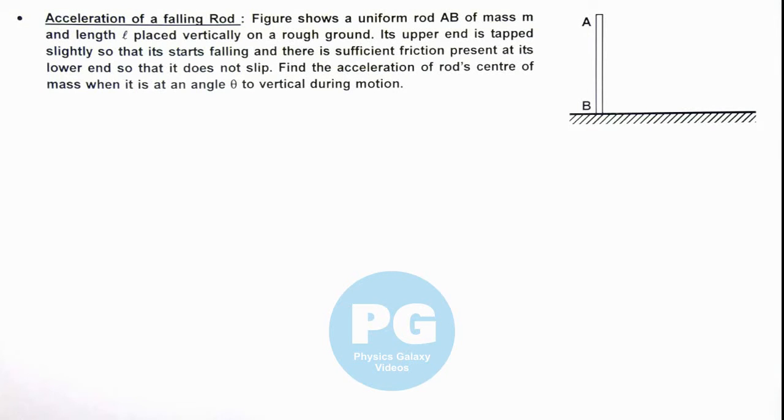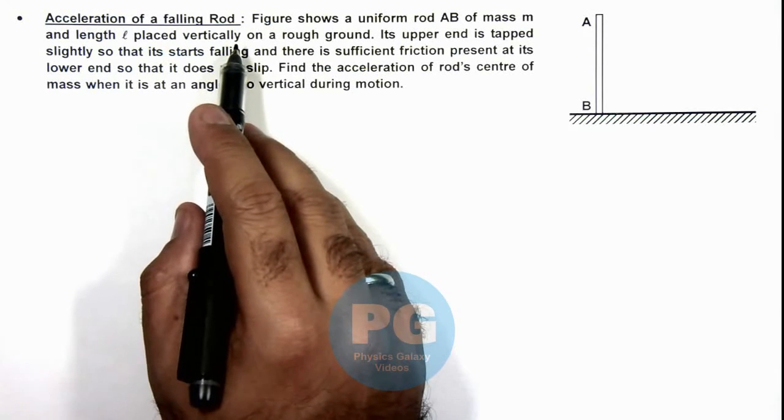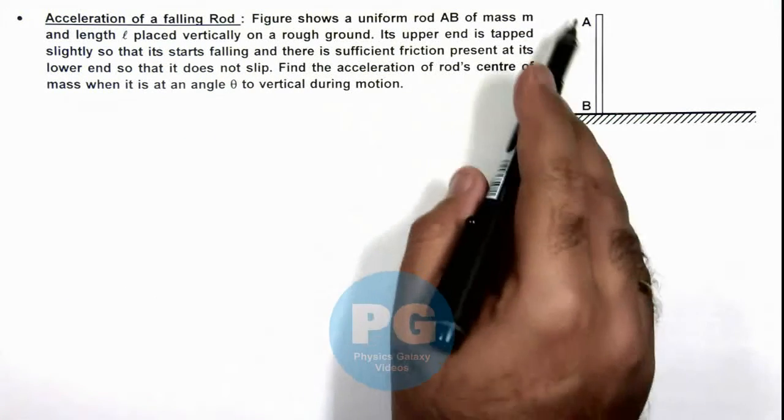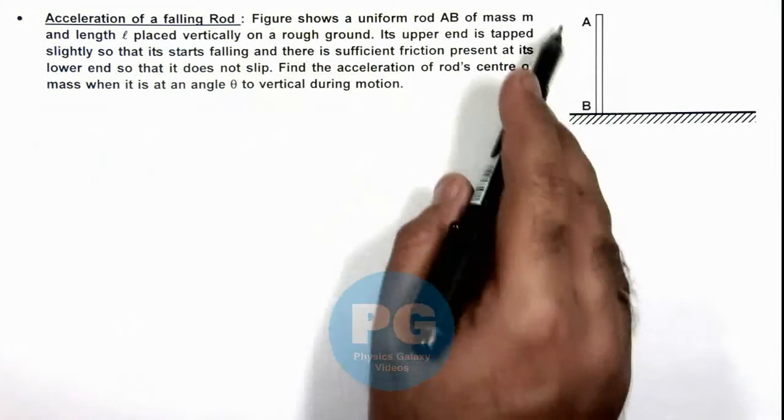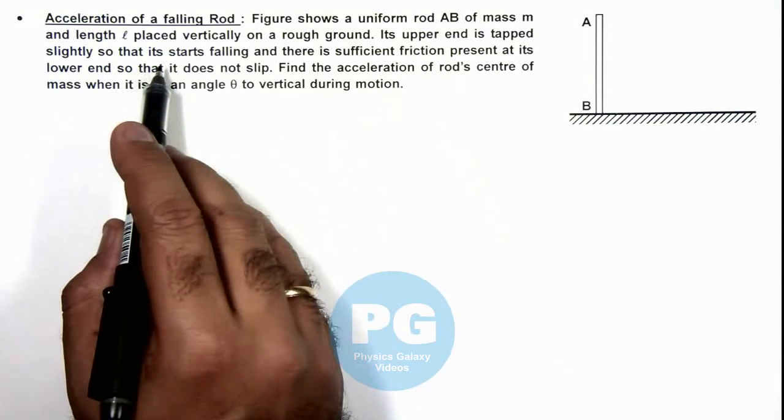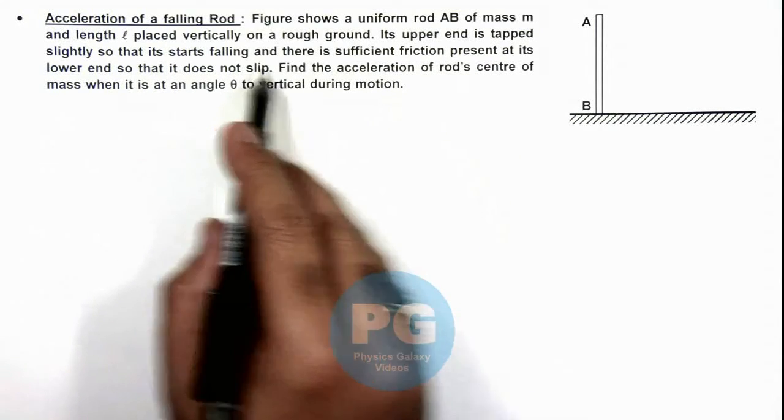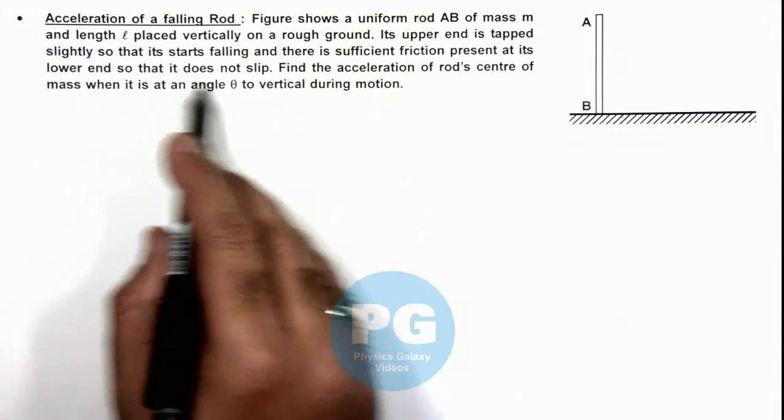In this illustration, we'll analyze the acceleration of a falling rod. The figure shows a uniform rod AB of mass m and length l, placed vertically on a rough ground. We are given that its upper end is tapped slightly so that it starts falling, and there is sufficient friction present at its lower end so that it does not slip.